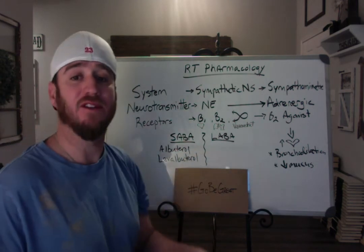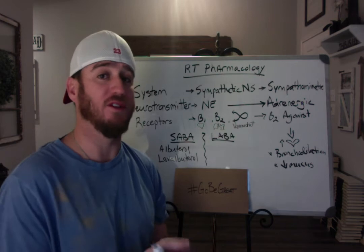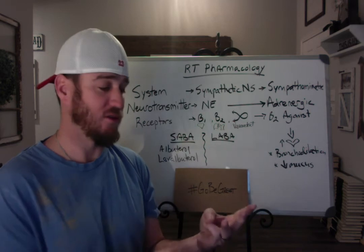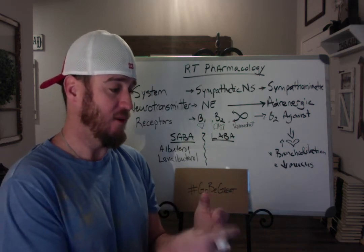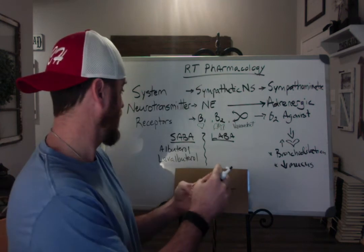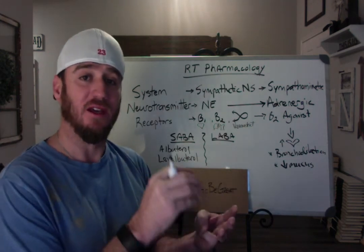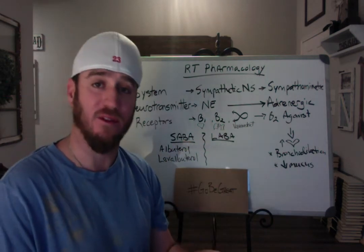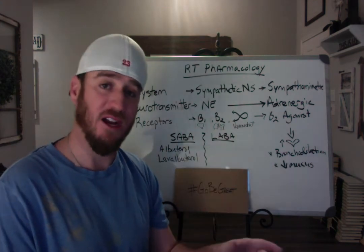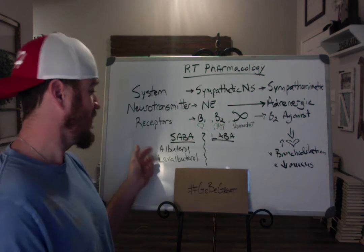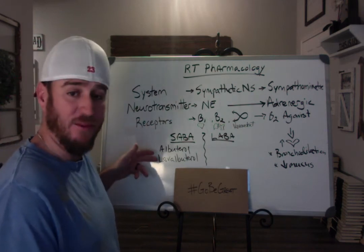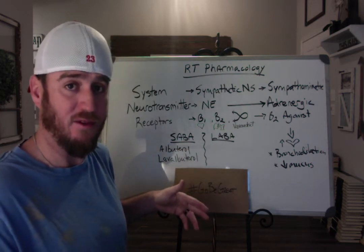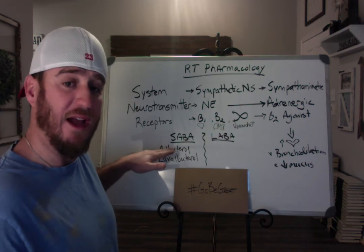If you're studying for your boards, there were a lot more SABAs than just albuterol and lev-albuterol. The list starts with norepinephrine, epinephrine, and dopamine — these are endogenous catecholamines within our body that create these effects. Then it goes to isoproterenol and isoetharine, then terbutaline, then metaproterenol, and finally down to the selective agents — albuterol and lev-albuterol. Lev-albuterol is known by the brand name Xopenex. Those are your two common short-acting beta adrenergics.